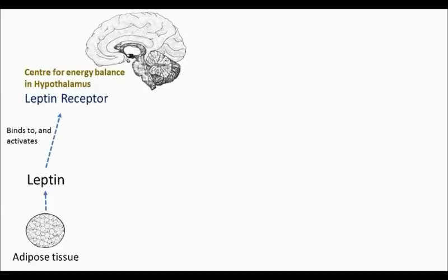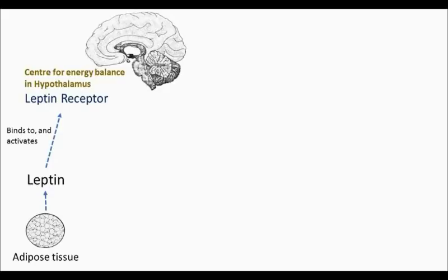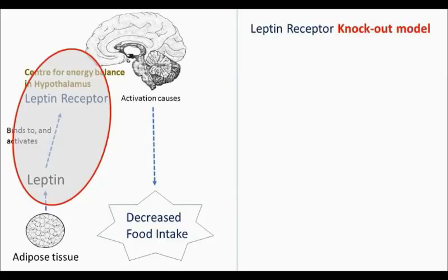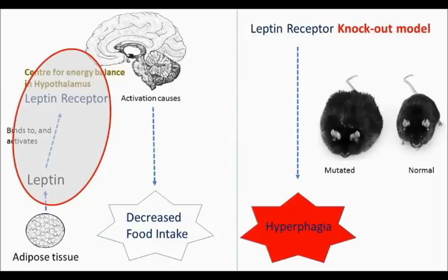Let us take the case of obesity. Adipose tissue secretes a hormone called leptin. Leptin binds to leptin receptors located in the hypothalamus and other brain regions that control energy balance and food intake. Activation of the receptor by leptin decreases food intake, and therefore the leptin signaling pathway is a valuable target for obesity. But the question of how valuable this signaling pathway is as a target can be ascertained by target validation. So, create a transgenic animal model with malfunctioned leptin signaling. If the animal exhibits excessive food intake, the role of leptin signaling is validated. That is exactly what happened in a leptin receptor knockout mice model where the genes for the leptin receptor were deleted — the animal exhibited hyperphagia and turned obese at a very young age. Therefore, the role of leptin signaling in obesity is validated.